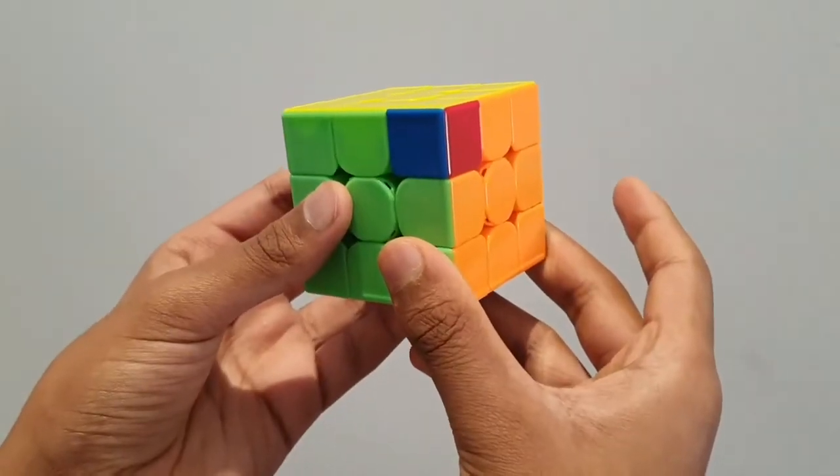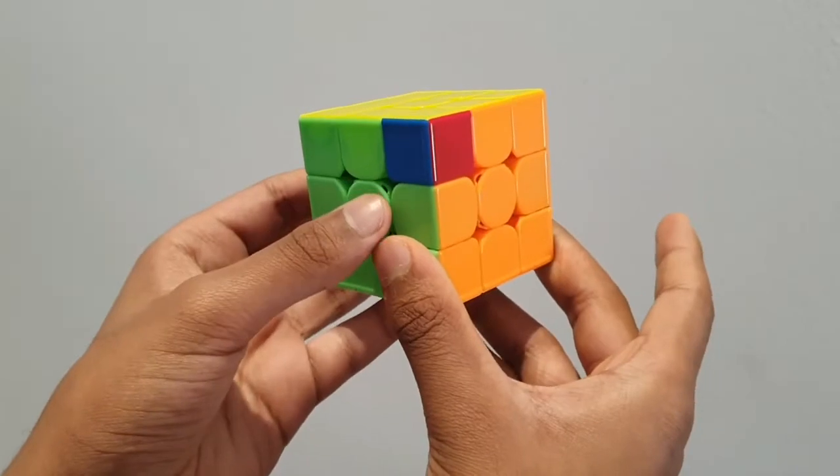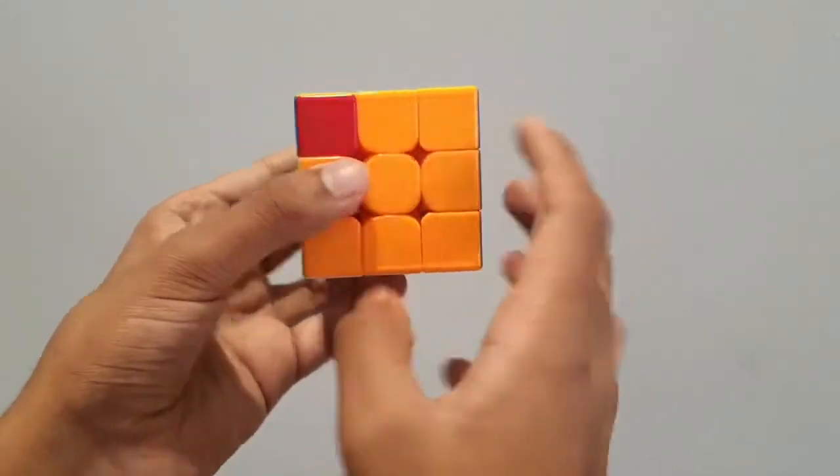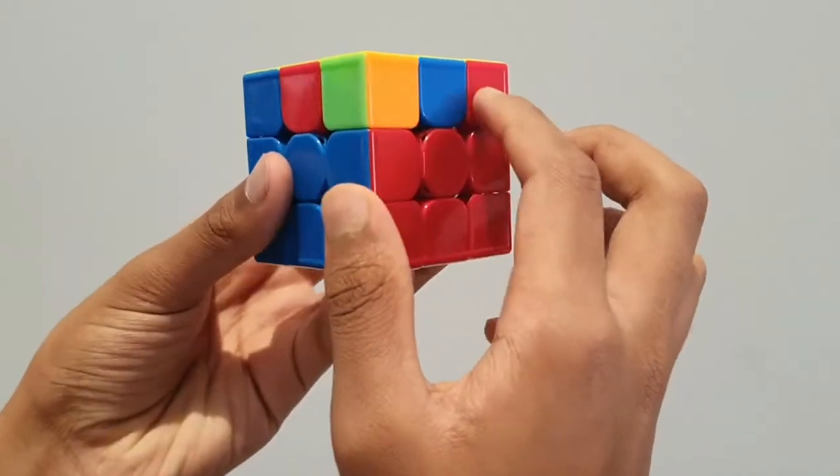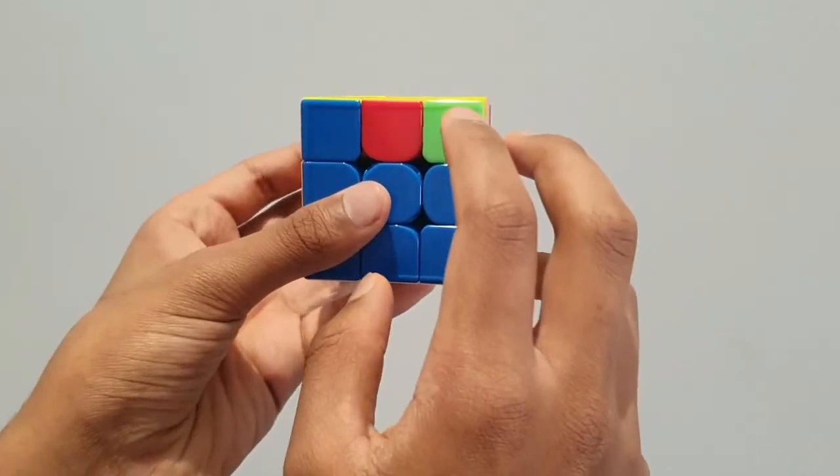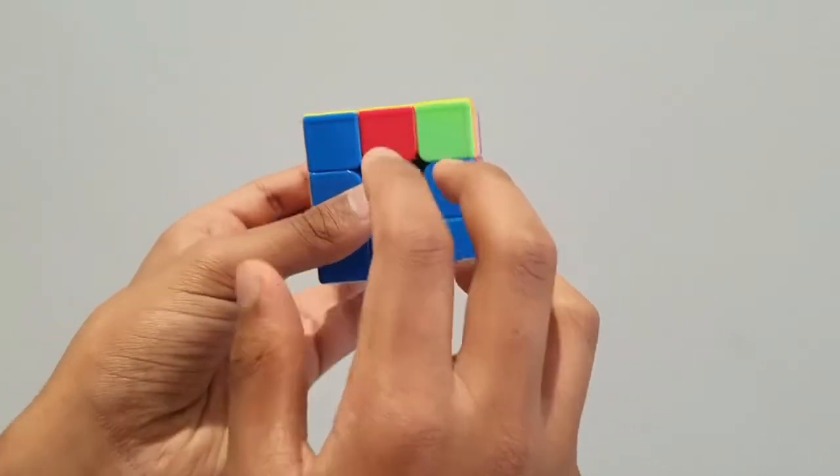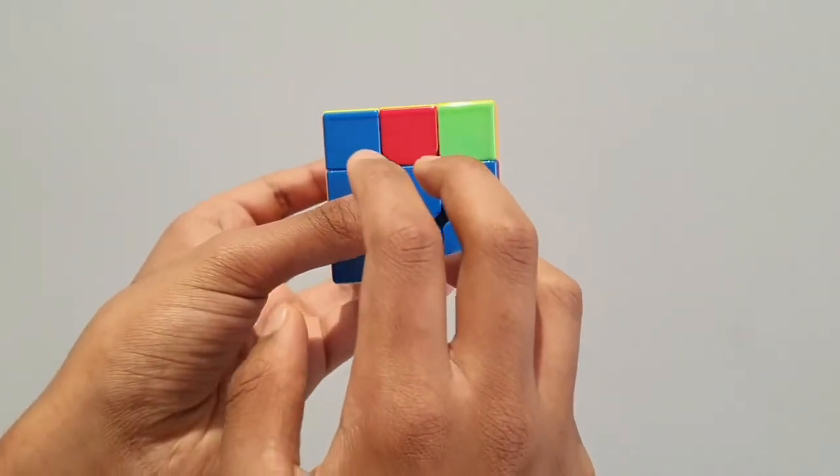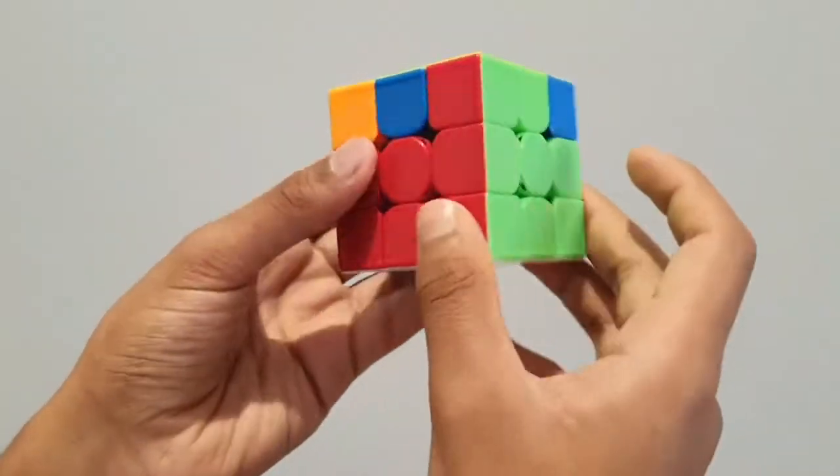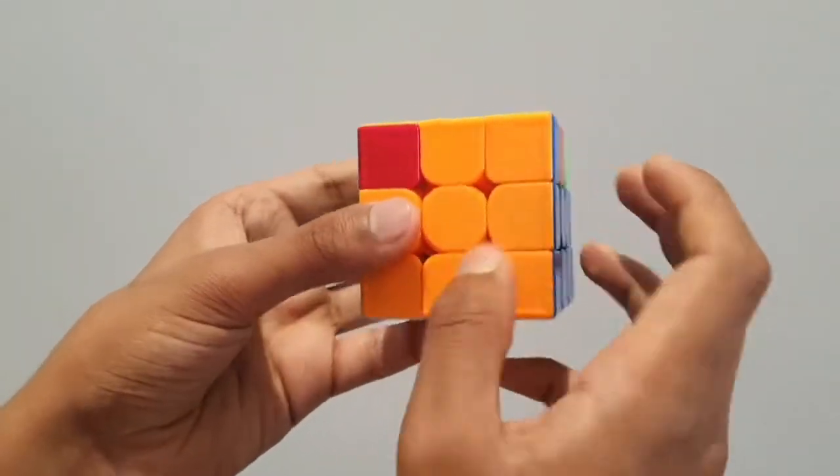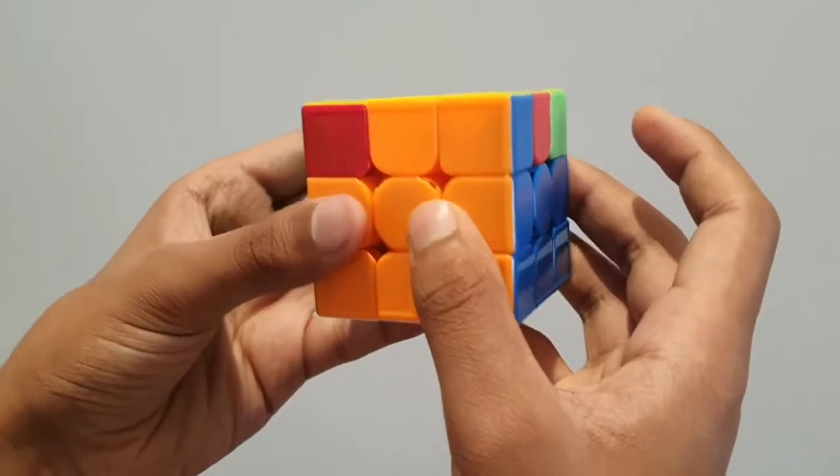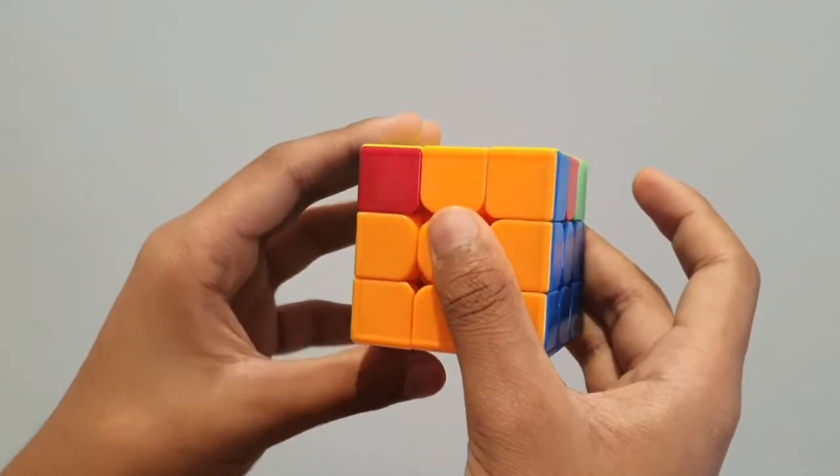To solve the corner pieces of a cube, the very first thing we have to do is look around the top layer of our cube. We're looking for any solved corner pieces, or in other words, any corner piece with matching colors. In our case, there are no matching corner pieces, so we have to learn our very next algorithm.